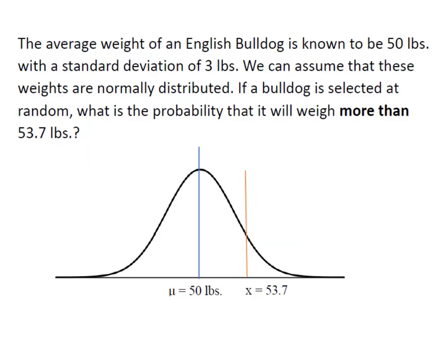The average weight of a bulldog is known to be 50 pounds with a standard deviation of 3 pounds. We can assume that these weights are normally distributed. If a bulldog is selected at random, what's the probability that it will weigh more than 53.7 pounds?